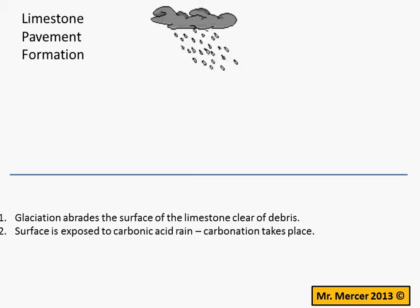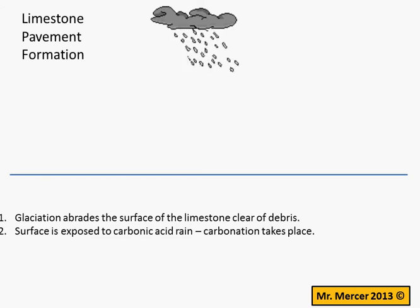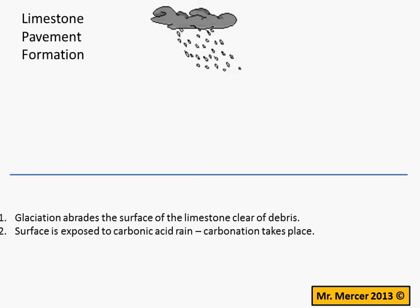You should point out that the carbonic acid rain is only mildly acidic. A process called carbonation takes place. Carbonation is when the carbonic acid dissolves the calcium carbonate of the limestone. Knowing the chemical terms will give you a better answer, so try and learn them. The carbonic acid dissolves the calcium carbonate into calcium hydrogen carbonate solution. This process is known as carbonation and that's the key term to remember.